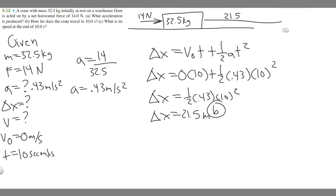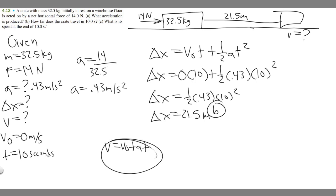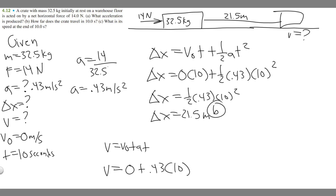Now we're finding the speed at the end of 10 seconds — the box will have ended up here. We use the formula v equals v₀ plus a times t. Plugging in: v₀ is 0, plus 0.43 times 10 seconds, which gives 4.3 meters per second. So the answer to C is 4.3 meters per second.